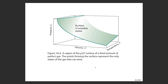Combining all the views: here we plot pressure, volume, and temperature together as a 3D surface. Along the P-V plane you see the hyperbola shape; along the other planes you see linear shapes. You can think of this as the combination of all the other graphics.